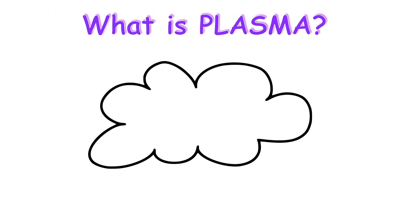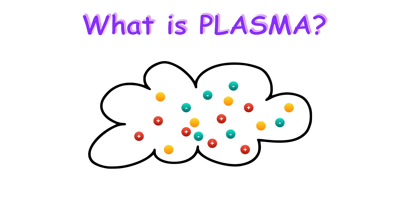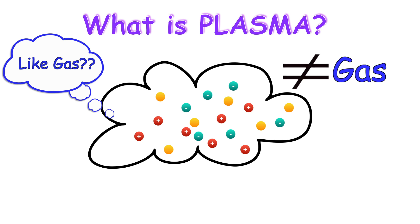So what is plasma? Plasma is a cloud of protons, neutrons, and electrons where all the electrons have come loose from their molecules or atoms. Plasma is more like gas compared to any of the other states of matter, but it is different from gas. In gas, the electrons are all bound to the nucleus, but in plasma, the electrons are free to move around the system.